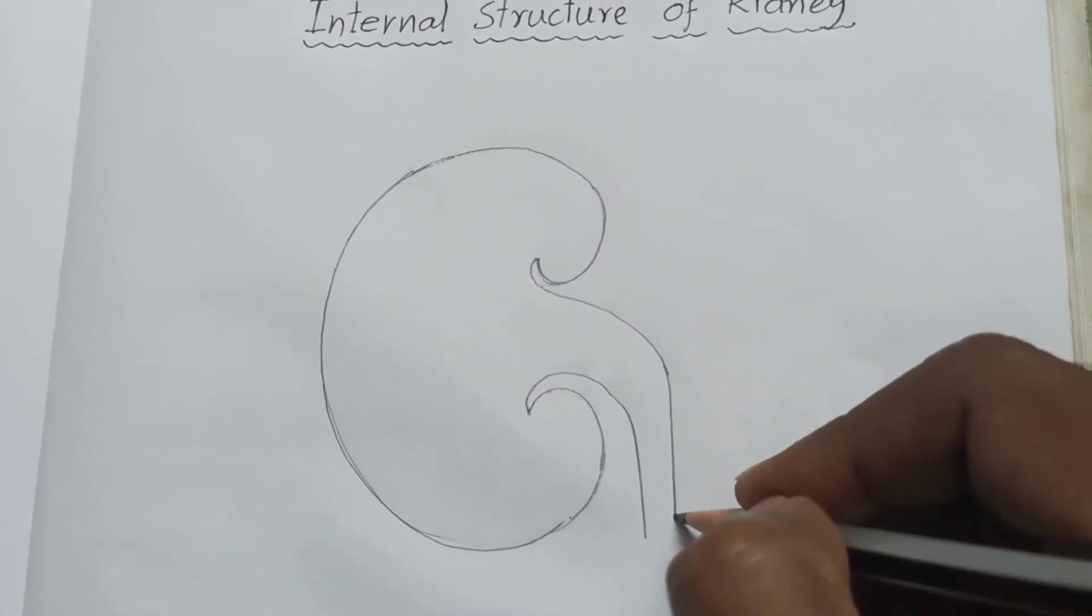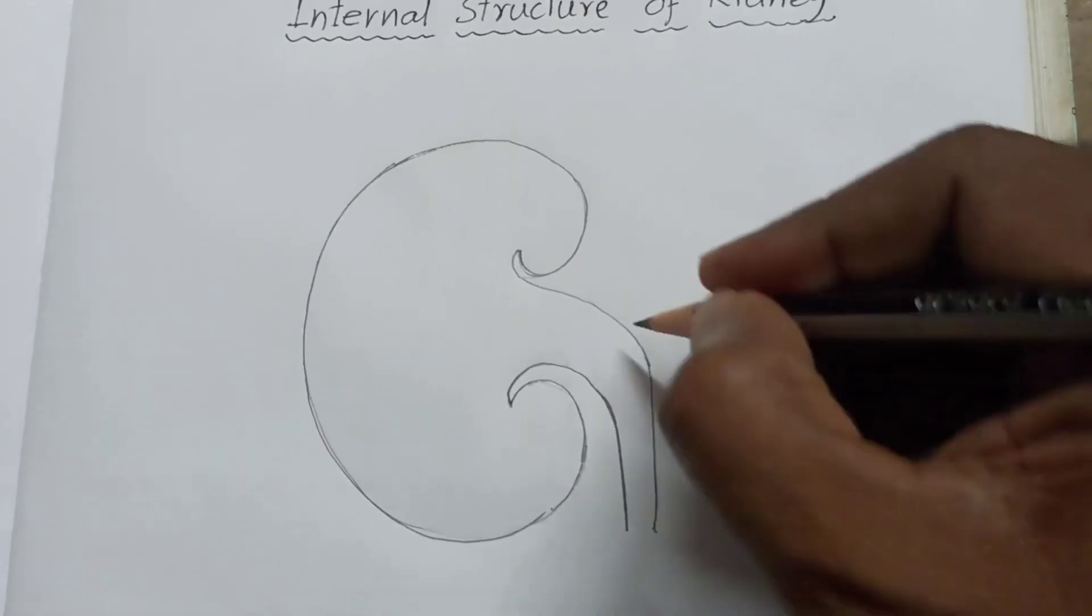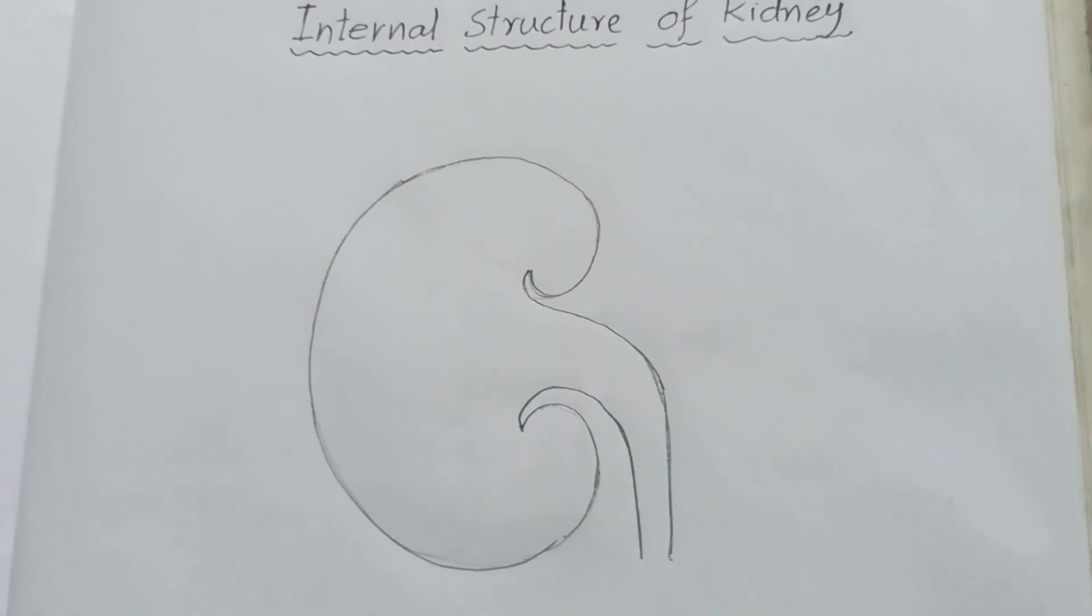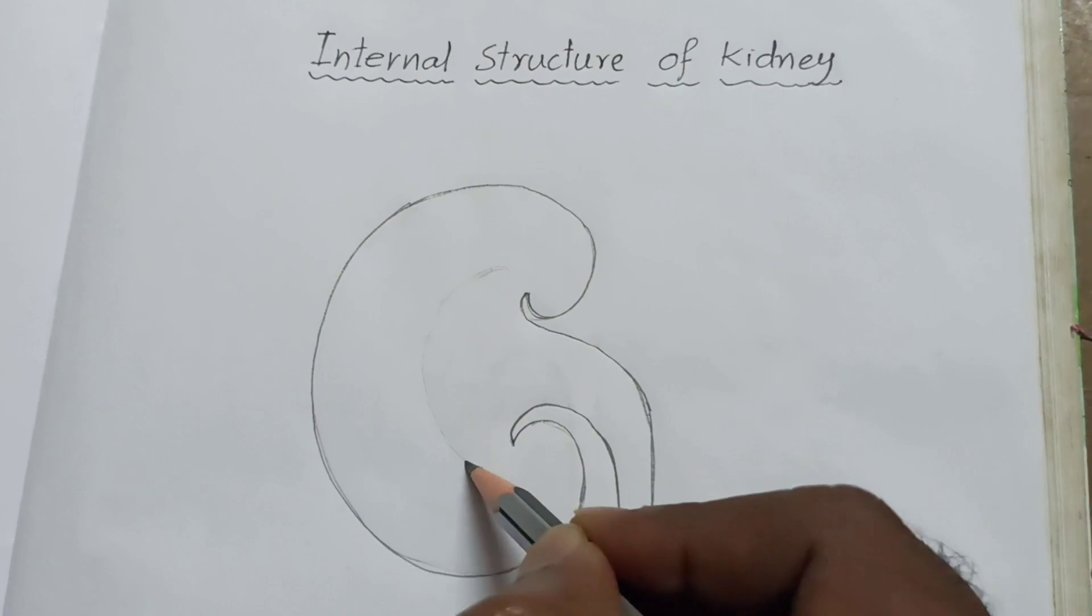This is ureter. You have to draw like this, this is ureter. Draw some light lines.